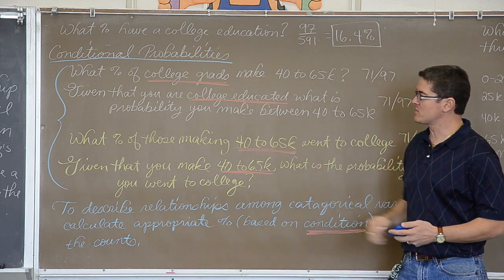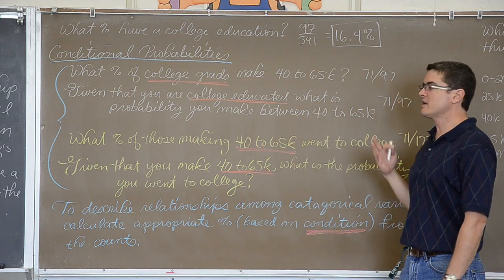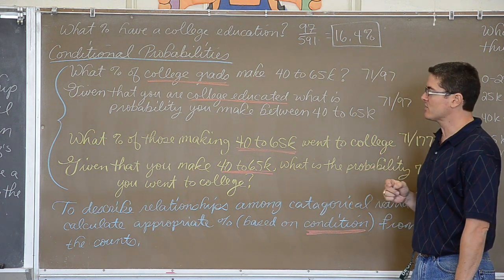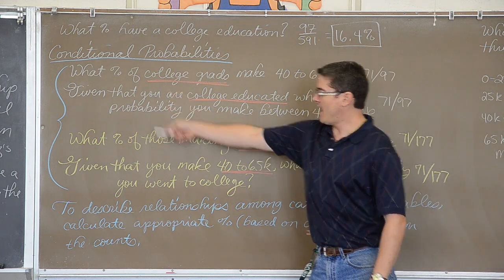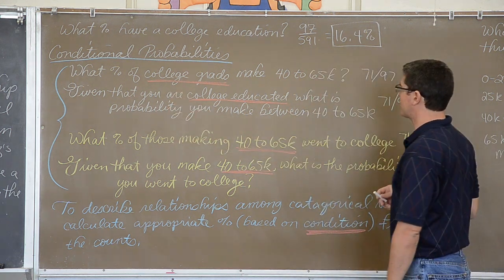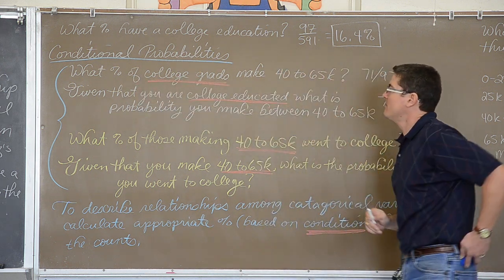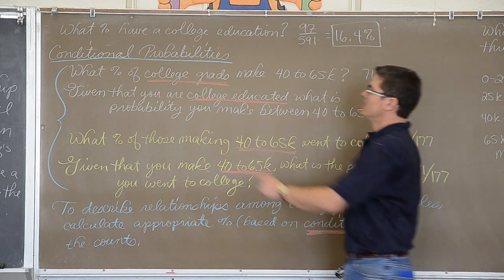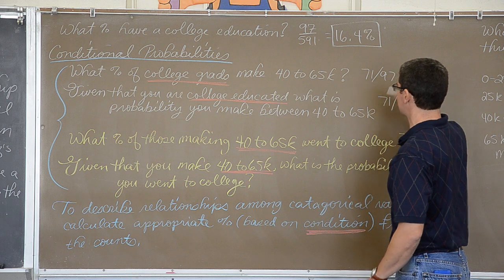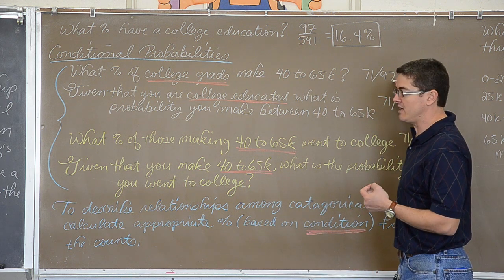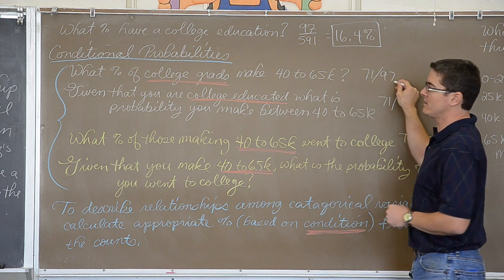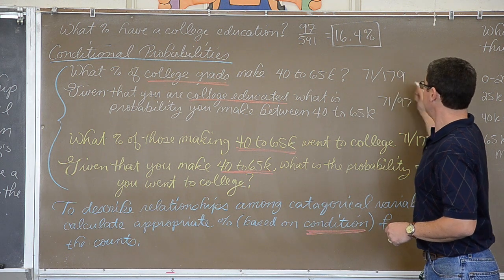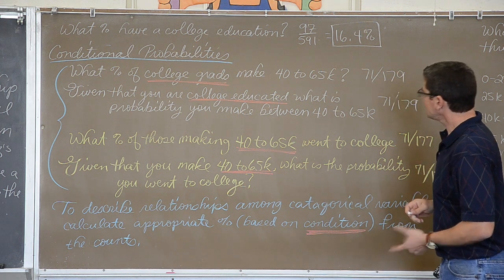Well now all of these questions, the two white ones and the two yellow ones, are conditional probabilities. And conditional probabilities will come back in symbol format when we talk about probability rules in a later chapter. But I would bet that reading these you probably would have set these up correctly already. What percent of college grads make 40 to 65 thousand dollars. Well, that is the number, first of all, the condition is what is the percent of college grads. So we are not using everybody in the study, that was 591 people. We are only considering the people that graduated from college and that was a total of 179.